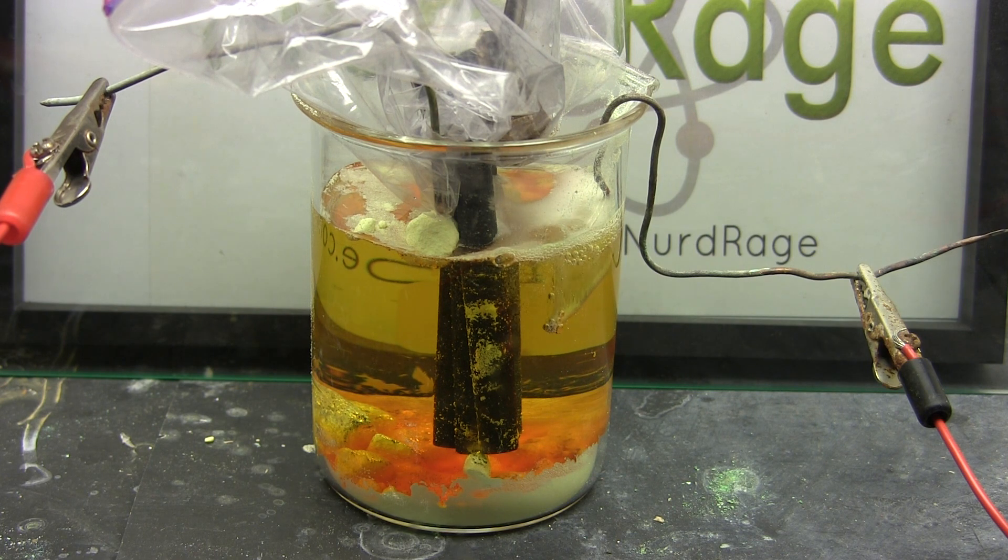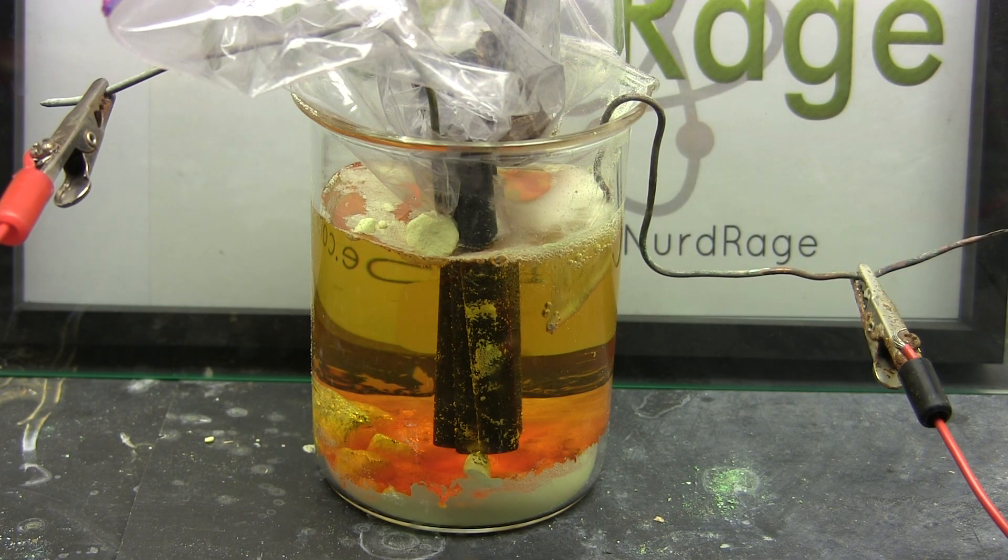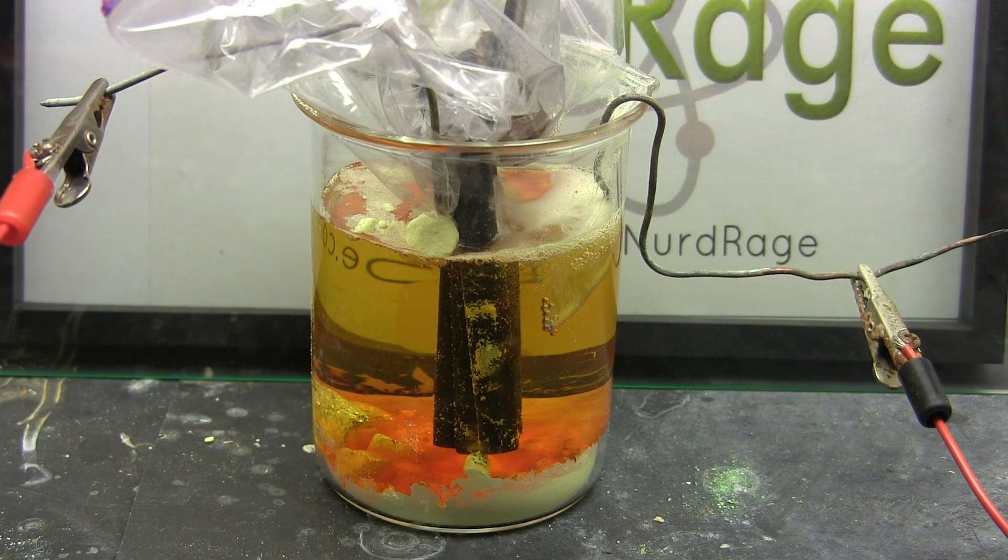We place the copper wire cathode high in the cell because we don't want it reaching into the tribromide and reducing it. This converts it back into bromide ions and wastes our electricity. So keep the copper cathode as close to the surface as possible.